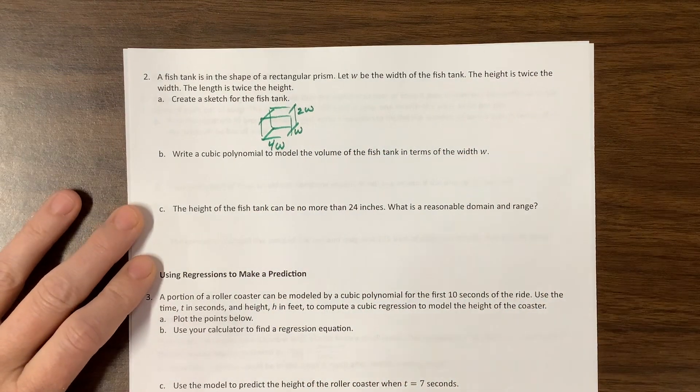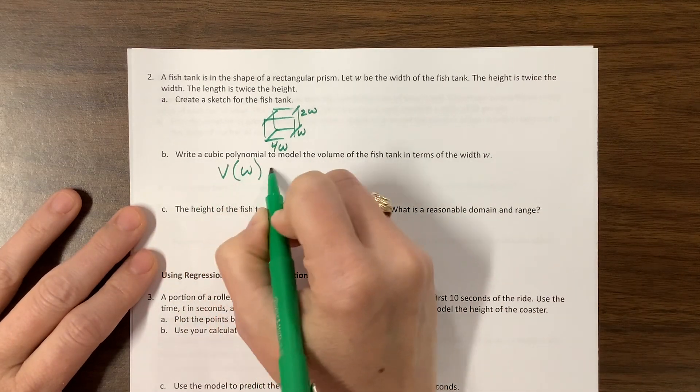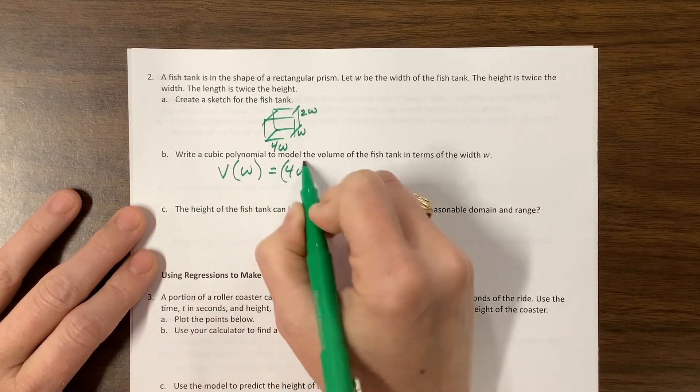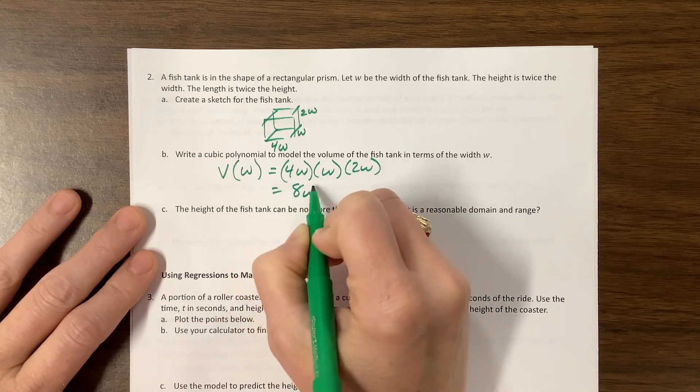So to find the volume, I just need to multiply length times width times height. So volume, in terms of the width, is equal to 4W times W times 2W, which is equal to 8W cubed.